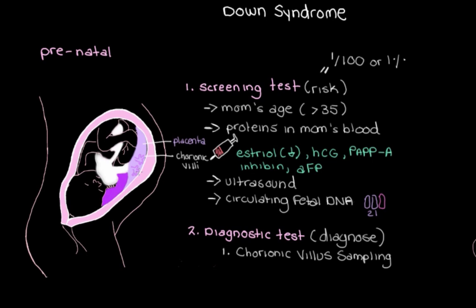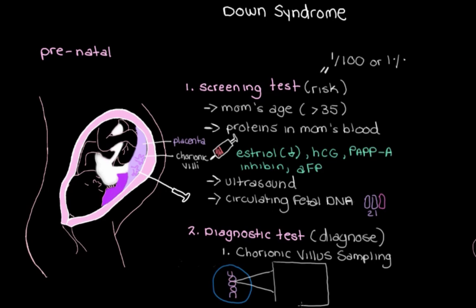We can access the chorionic villi through the cervix or through the abdominal wall, depending on how the placenta is positioned. Once inside, we take a small sample of the chorionic villi and look at the chromosomes in those cells to see if there is any extra genetic material from chromosome 21. In the majority of cases, if the fetus has Down syndrome, we would see three copies of chromosome 21 in each of the sampled cells — though there are a few other ways a fetus can have extra chromosome 21 material.